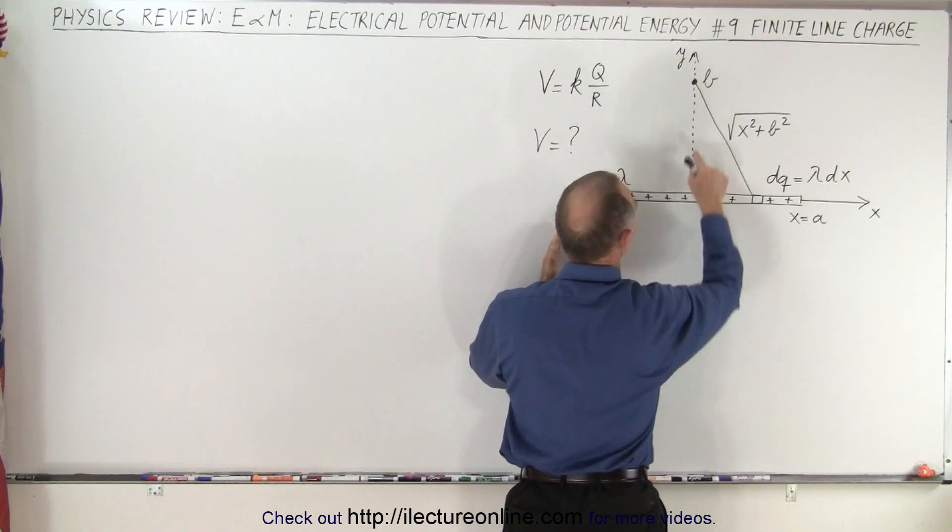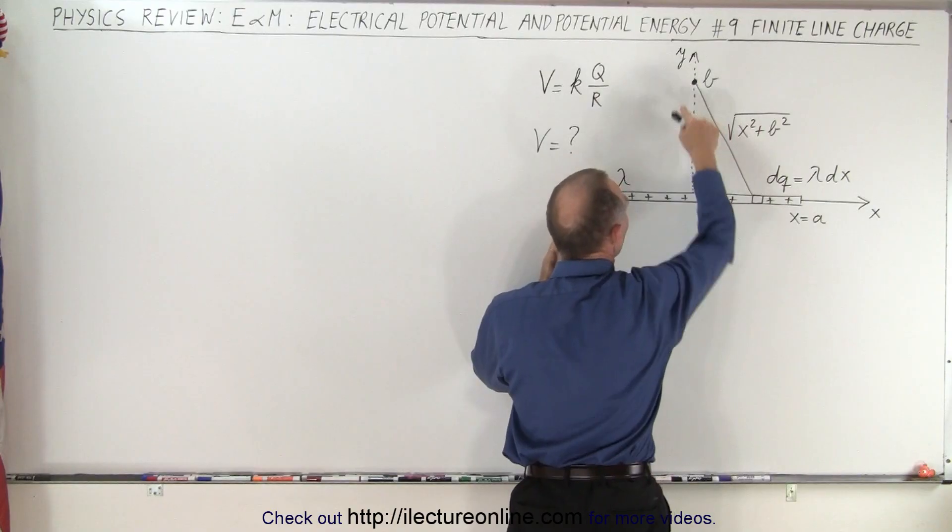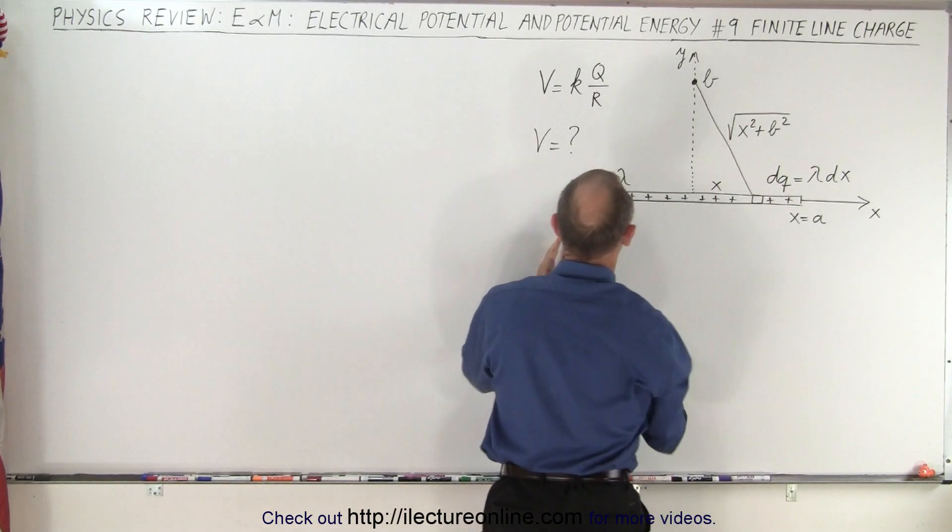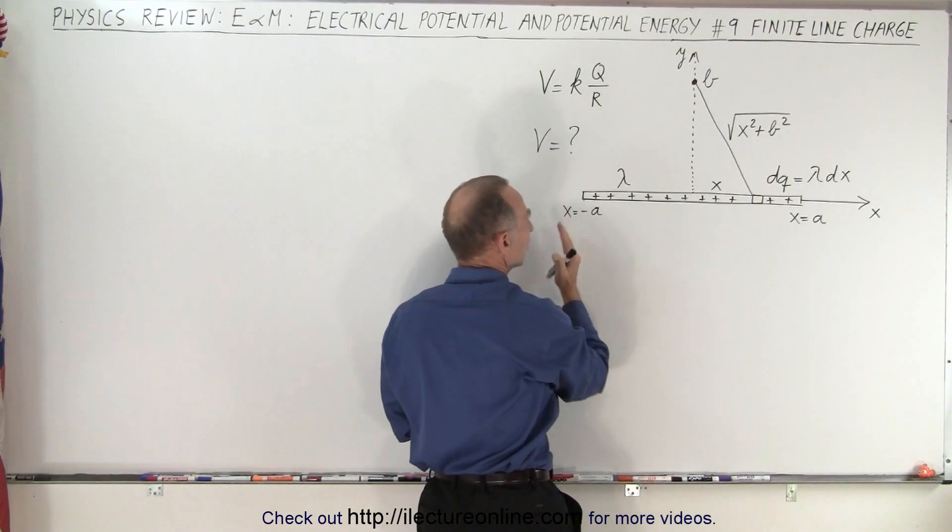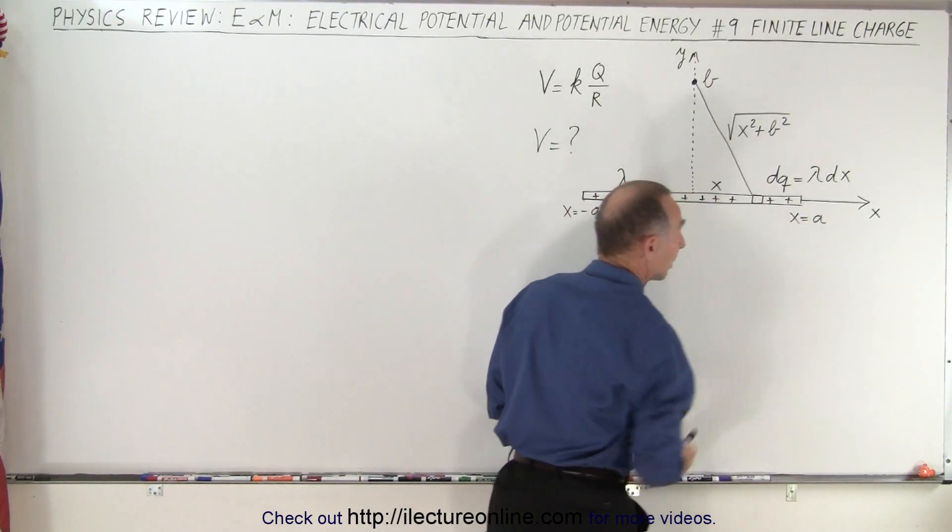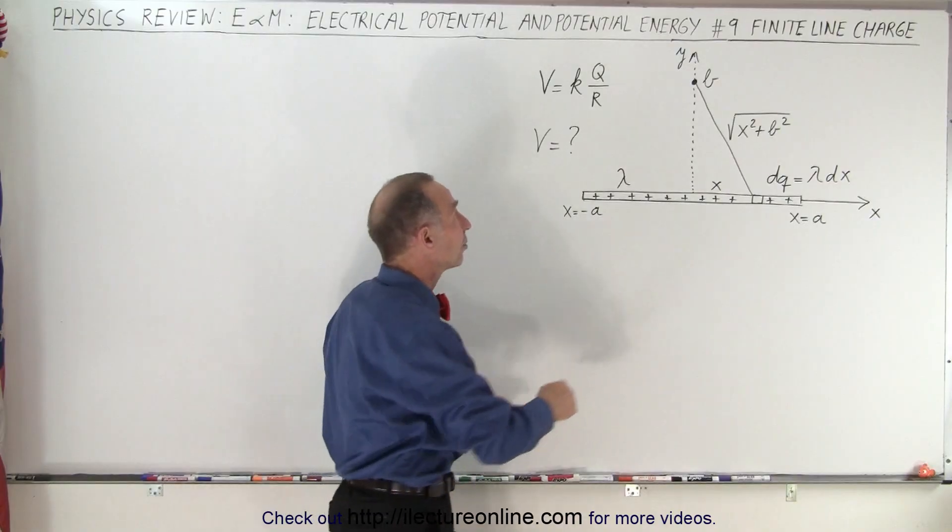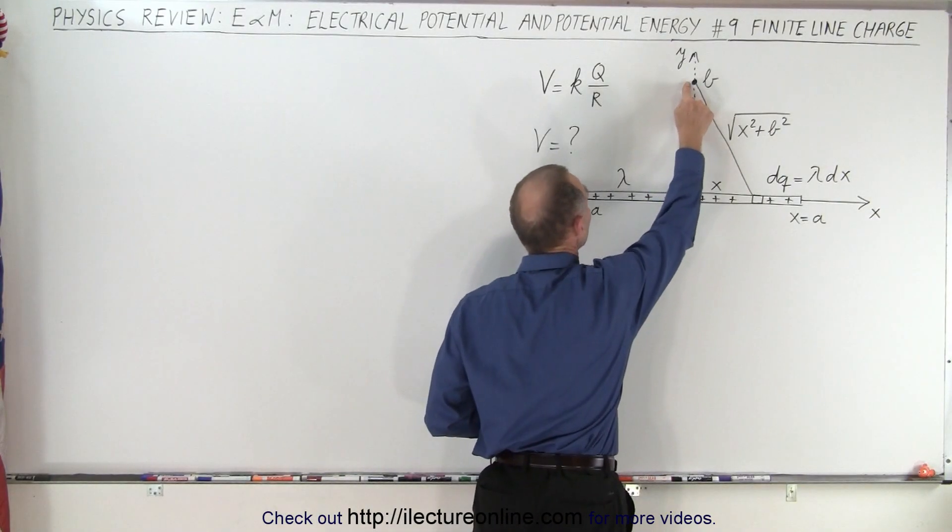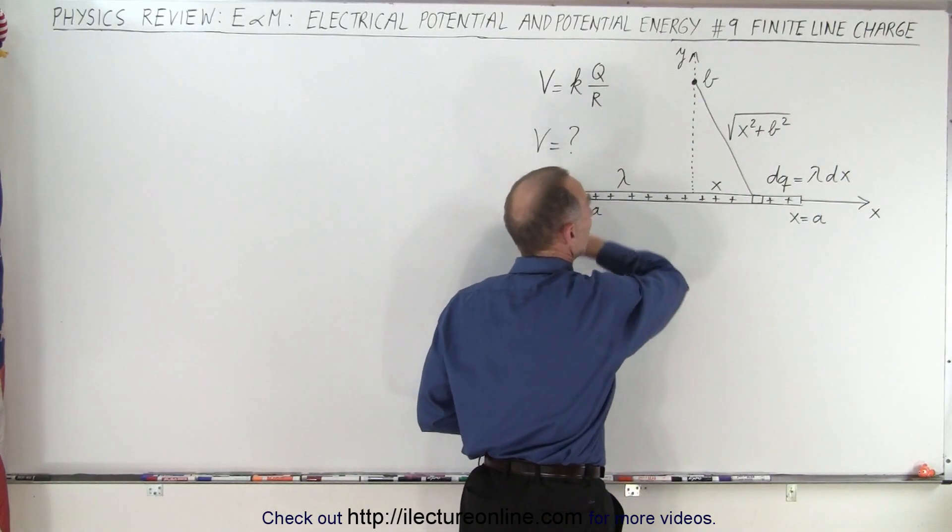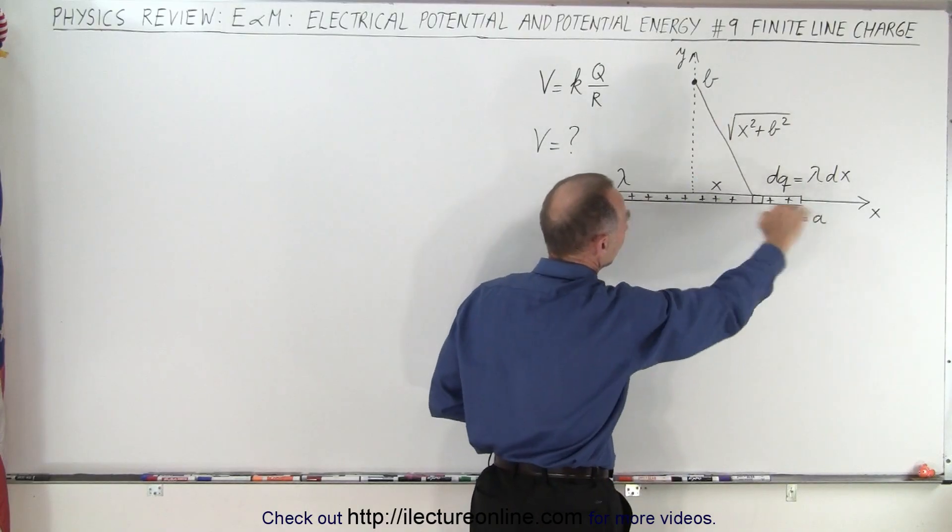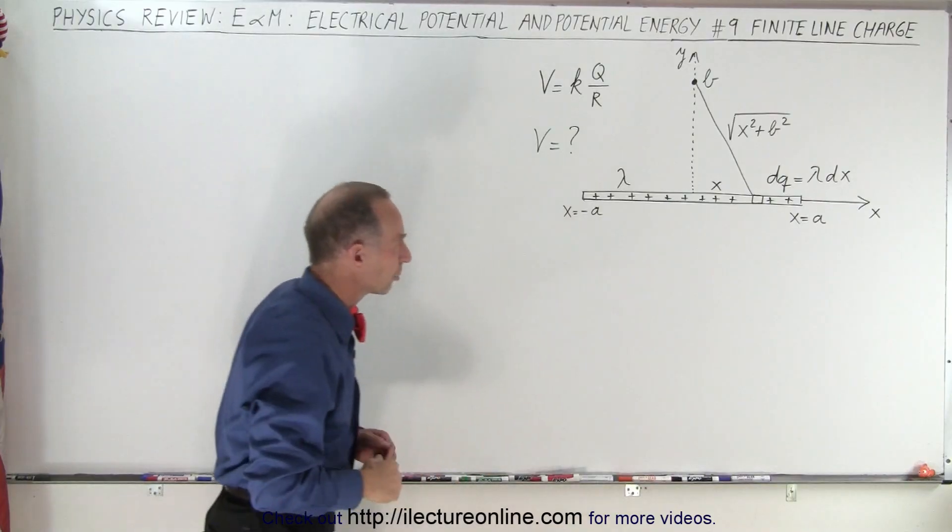We have the middle right here and a point right across from the middle which is b away from that line of charge. And so there you have x equals negative a and x equals a. And ultimately what we're trying to find is the potential at this location here relative of course to that line charge.